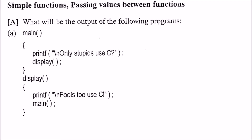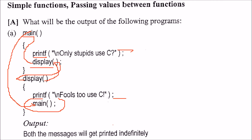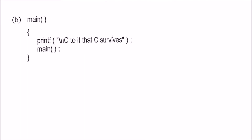What will be the output of this program? First of all, this main has a print and this is a display. Now display is calling main again. So main control will go to the display function, then again the control will go back to main and this will go on and on. So these two lines will be printed indefinitely — an infinite loop basically.